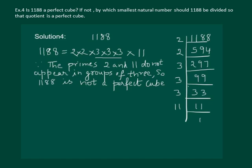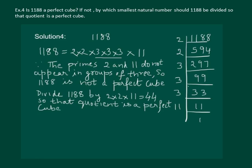then we will be left with the perfect cube. So we can write that divide 1188 by 2 into 2 into 11, that is equal to 44. So that quotient is a perfect cube.